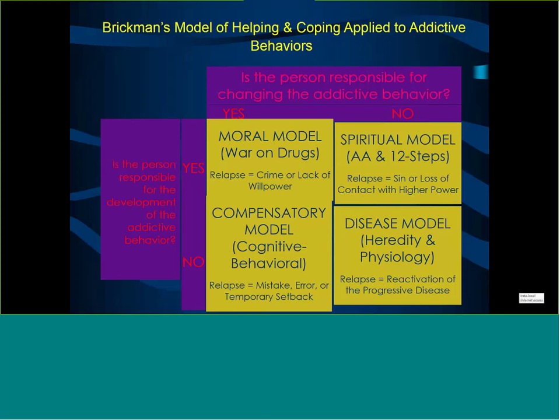The model being more embraced now is the compensatory model, originally conceptualized by Alan Marlatt. This model holds that once people are addicted, they have responsibility and a choice about whether to change their behaviors, but they are not to blame for the development of the addictive behavior. This will really determine what sort of treatment we provide, even for people with co-occurring disorders.